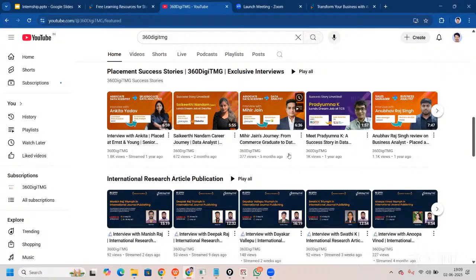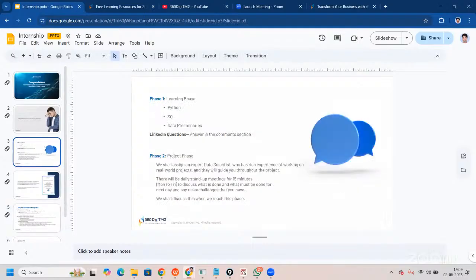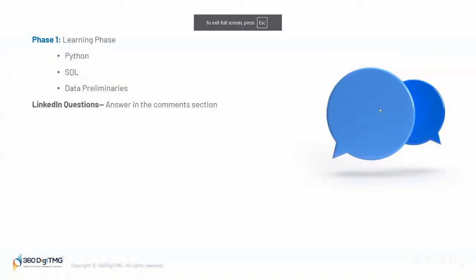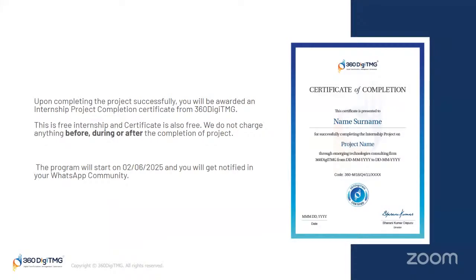Let's revise the basics once. This is a free internship program from 360 DTMG and it will be in two phases. First, the learning phase: you'll have three videos every single day, there will be questions and you need to post answers in the comment section, and you'll get LMS access once you fill the Google form posted in your community. Second, the project phase: you'll be working on a project with a 15-minute meeting every day to discuss risks, challenges, and next steps. After completion, you'll receive a certificate with your name and project name. The project is starting — make sure you fill the Google form as soon as possible and you'll be notified in your WhatsApp community.